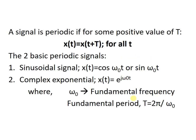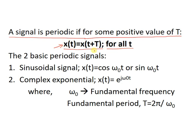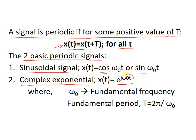Now, Fourier series — what does it say? We all know a signal is periodic if, for some positive value of T, x(t) equals x(t + T) for all t. We have seen that this is the criteria for a signal to be periodic in nature. For periodic signals, we have two basic periodic signals: one is the sinusoidal signal — it may be either cosine or sine signals — and we have another, complex exponential signals, e to the power j·ω₀·t. We have seen that this e to the power j·ω₀·t is a combination of both cosine and sine waves.